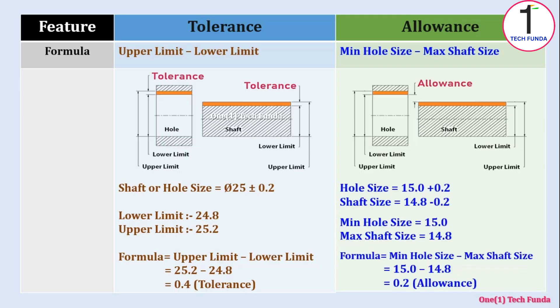Hole size is diameter 15 mm plus 0.2 mm tolerance. Shaft size is diameter 14.8 mm minus 0.2 tolerance. Means minimum hole size is 15 mm and maximum shaft size is 14.8 mm. After putting the values in formula, we will get the allowance, that is 0.2 allowance.